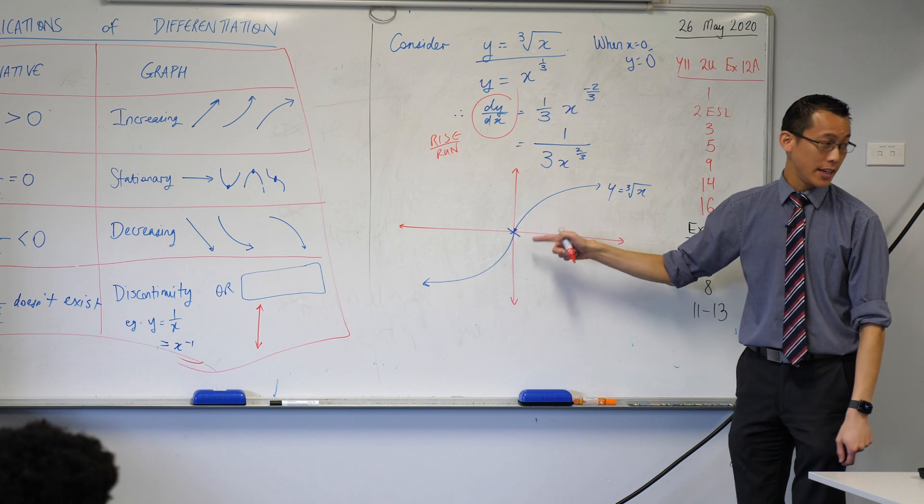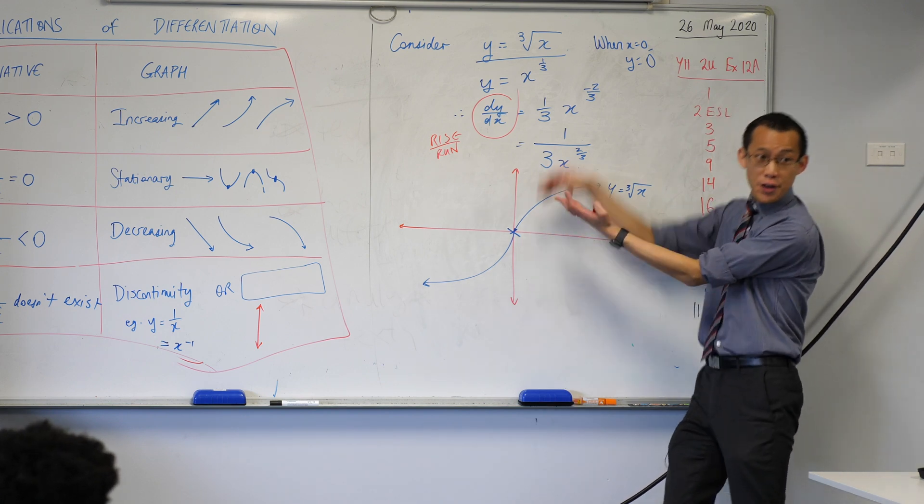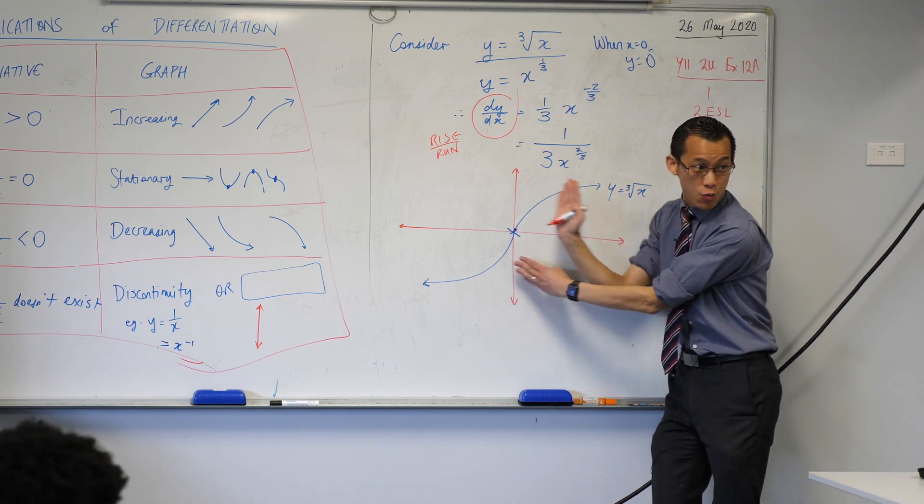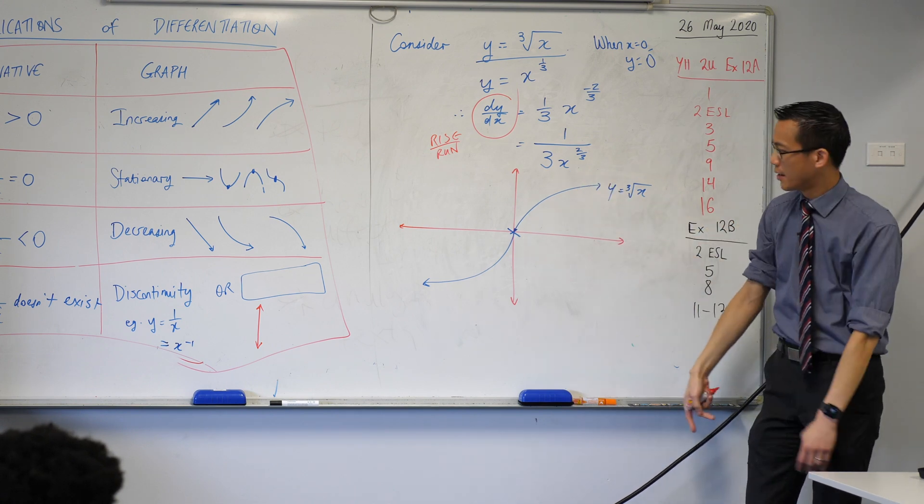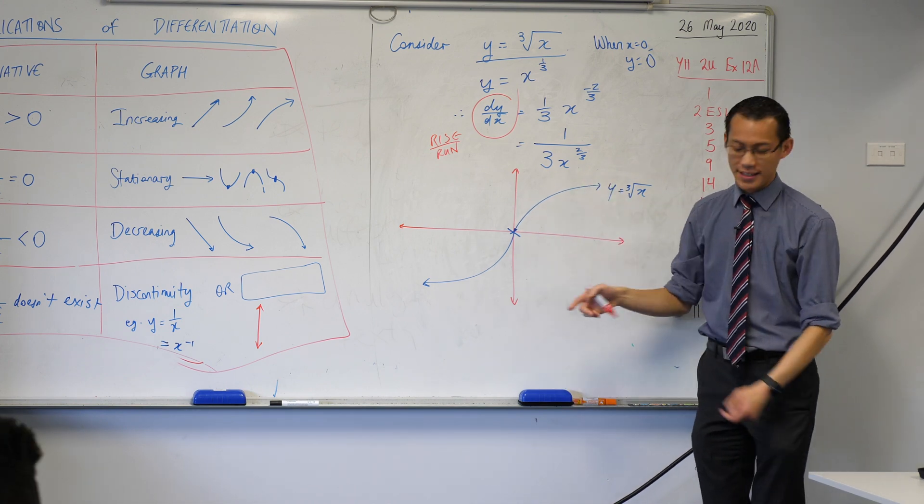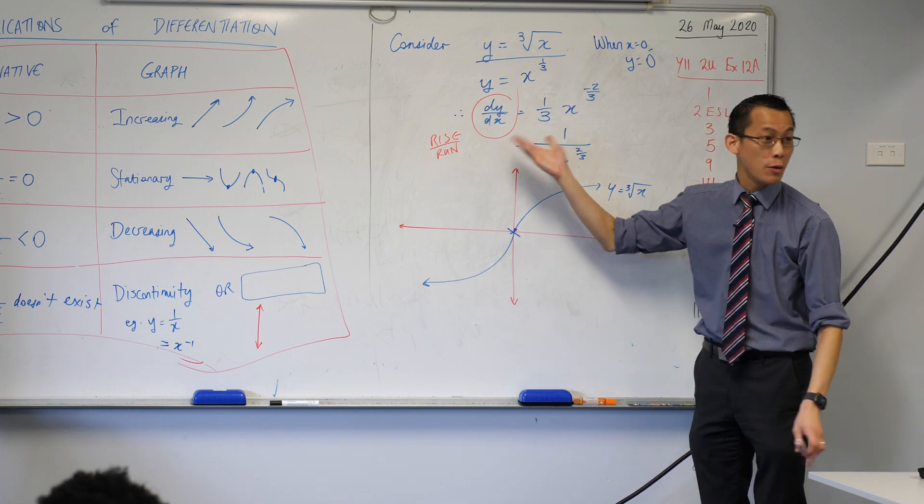But at this point here, there's infinite rise and there's no run. Do you see that? It's like, it's equal to zero. So that's why, even though the function exists, the derivative doesn't.